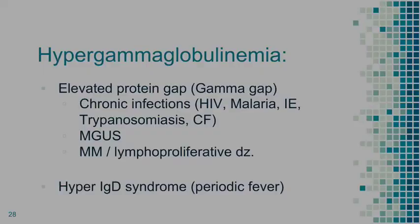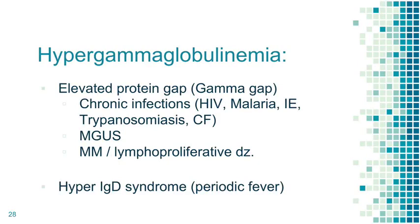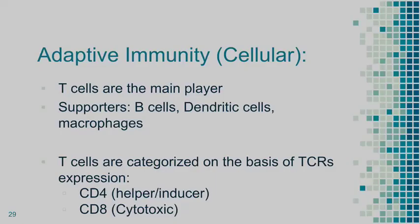What if you have too many antibodies? That's your gamma gap. Chronic infections such as HIV, malaria, infective endocarditis, and trypanosomiasis cause it. MGUS is where we don't know if it's significant. Multiple myeloma and lymphoproliferative diseases represent uncontrollable monoclonal antibody production from malignancy. Then there's hyper-IGD syndrome — a periodic fever syndrome where elevated IgD causes chronic inflammation and fevers. Whenever you have fever of unknown origin with a gamma gap and you've ruled everything out, that's what you think about.